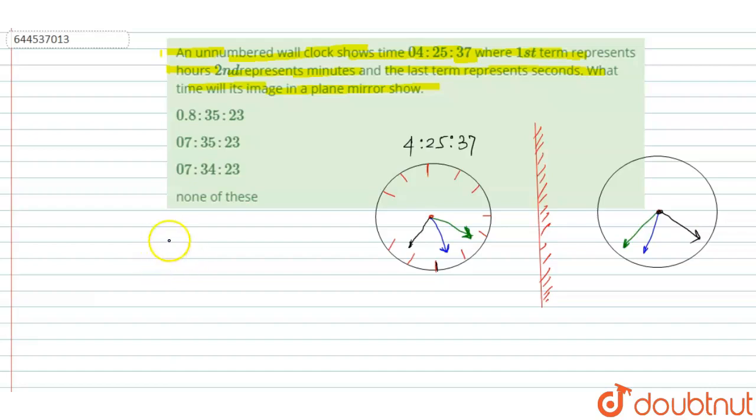And this is equal to, this can be found with the help of subtracting 11 hour 60 minute 60 second. And when we subtract this time, that means 4 hour 25 minute and 37 second.